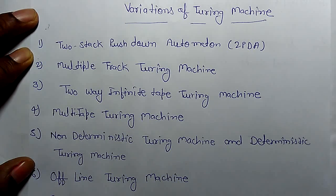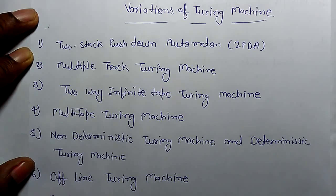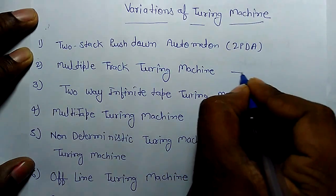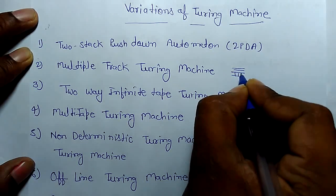Similarly, there is a multiple-track Turing machine. As we know, there is a single track for input or updates in a Turing machine. But there is another Turing machine called the multiple-track Turing machine, which means there is more than one input place.